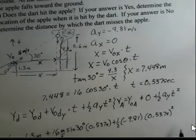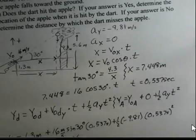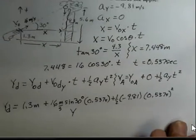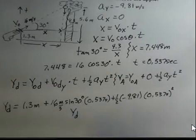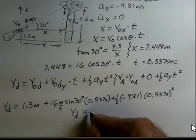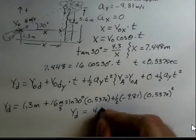So you ought to crank this out in your calculator. Do one term at a time. Combine the result. This term is going to be a negative number. But when you do that, you should come up with a solution here that the Y position of the dart at a time of 0.537 seconds is approximately 4.18 meters.